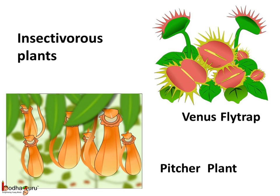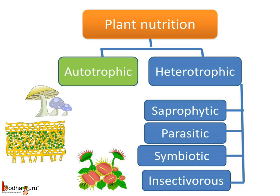And lastly, as we saw, a few plants like the pitcher plant and Venus flytrap eat insects to fulfill their need for minerals. They are insectivores and this type of nutrition is called insectivorous nutrition. So in a nutshell: in autotrophic nutrition, the plant makes its own food. In heterotrophic nutrition, the plant depends on others — such as saprophytic nutrition where it depends on rotten substances, parasitic nutrition where it absorbs nutrients from a host, symbiotic nutrition where two plants depend on each other, and insectivorous nutrition where the plant eats insects.